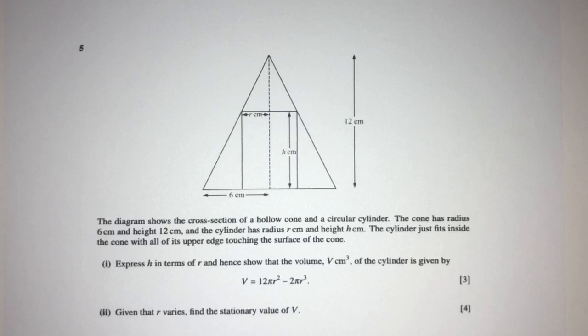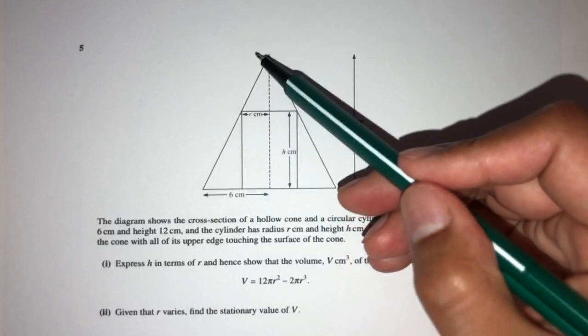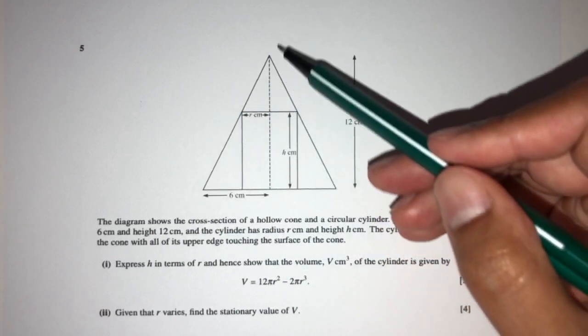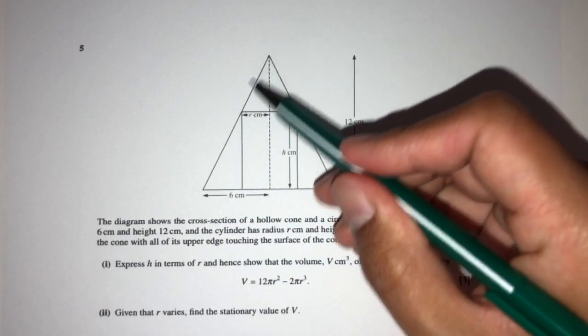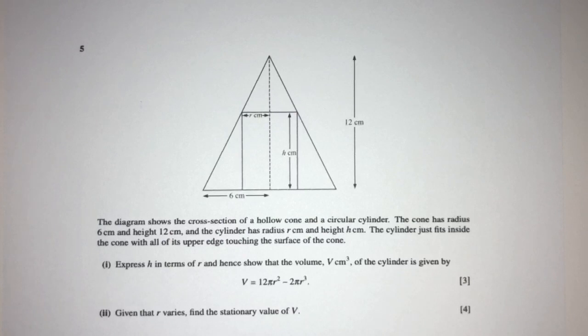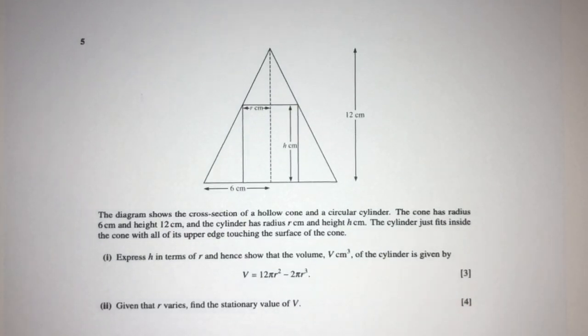Now obviously the first thing that I'm thinking about is we can find the slant height. We can find this height because this is a right angle triangle obviously. But anyways let's see what the question will be for this topic.